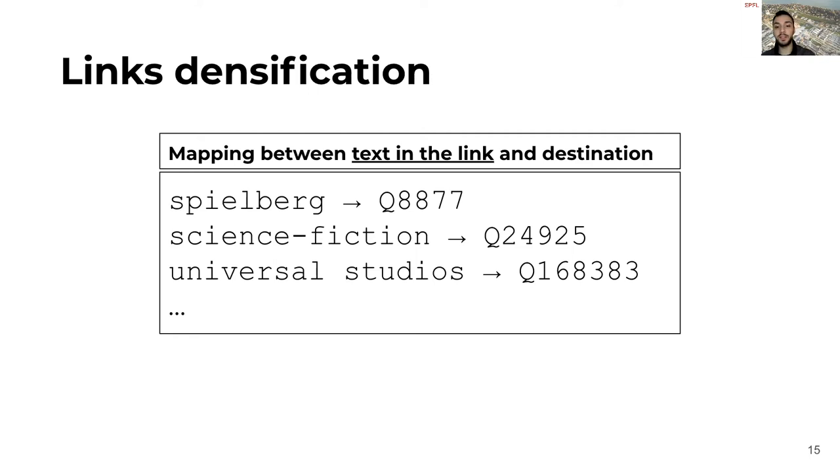When we have an ambiguous text that can have multiple candidates, we use a matrix factorization approach on the adjacency matrix of the links to assign the article that is mostly related. When we find a match, we add the QID of the destination to the bag of links of that document.